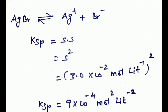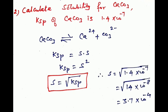Second problem: Calculate the solubility of calcium carbonate given that its solubility product Ksp is 1.4×10⁻⁷. Calcium carbonate ionizes as CaCO₃ ⇌ Ca²⁺ + CO₃²⁻. The solubility product Ksp equals S × S, that is S squared. Since Ksp is given, solubility S equals the square root of Ksp, that is the square root of 1.4×10⁻⁷.